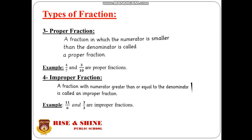The third type is proper fraction. A fraction in which the numerator is smaller than the denominator is called a proper fraction. For example, 4 by 7 and 3 by 10 are proper fractions because their denominators are greater than the numerators. Number four is improper fraction. A fraction with numerator greater than or equal to the denominator is called an improper fraction. For example, 11 by 6 and 3 by 3 are improper fractions: in 11 by 6 the denominator is smaller than the numerator, and in 3 by 3 both are equal.